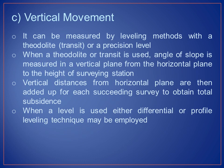Vertical movement can be measured by leveling methods with a theodolite, transit, or a precision level. When a theodolite or transit is used, the angle of slope is measured in a vertical plane from the horizontal plane to the height of the surrounding station. Vertical distances from the horizontal plane are then added up for each succeeding survey to obtain total subsidence. When a level is used, either differential or profile leveling technique may be employed.